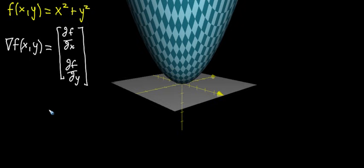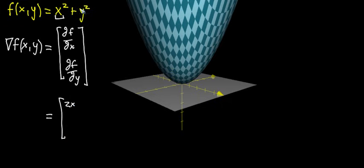For a function like this, we can actually evaluate it. The first component is the derivative with respect to x — it looks at x as a variable and takes its derivative, giving 2x. The y component just looks like a constant as far as the partial with respect to x is concerned, and the derivative of a constant is zero.